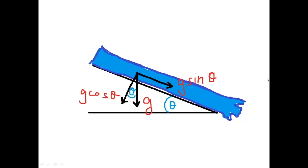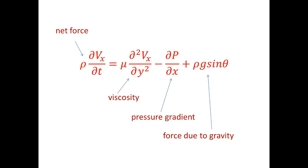We now have an equation that looks much easier than the general form. This is just a restatement of Newton's second law, with the viscosity term included. On the left side of this equation, you get the net force acting on a unit volume of the fluid. The three terms on the right side of the equation, which are governed by the viscosity, the pressure gradient, and the force due to gravity, together give the net force acting on a unit volume.